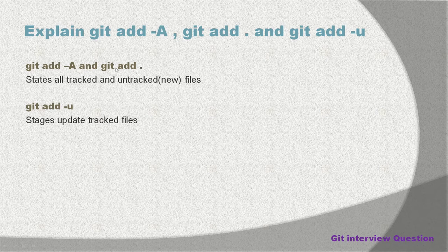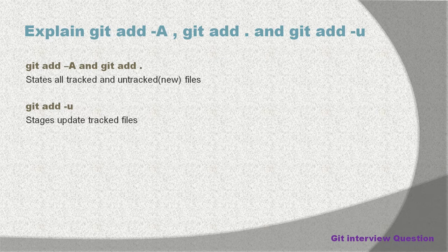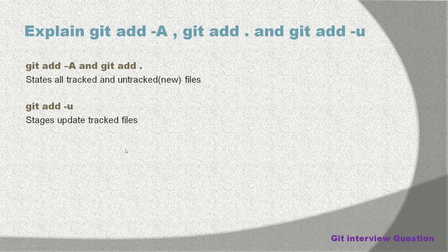git add -A and git add dot (period) basically stage all the tracked and untracked files. What I am trying to say is: if you create some new file, if you delete some existing file, or if you update some existing file, then all those things are going to be tracked by these two commands. So git add -A and git add dot both work in almost similar fashion.